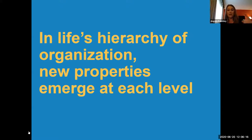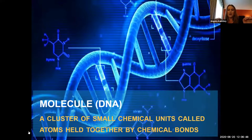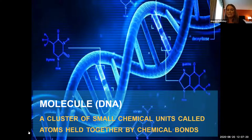Your challenge is to try to figure out what the next level example is going to be — specifically, try to figure out at some point which animal we're making as we build up. We're going to start with the smallest piece, which is a molecule. Our example here is DNA. A molecule is a cluster of small chemical units called atoms that are held together by chemical bonds. When you put a bunch of molecules together, they make an organelle — a membrane-enclosed structure that performs a specific function within a cell. Our example of an organelle is the nucleus.